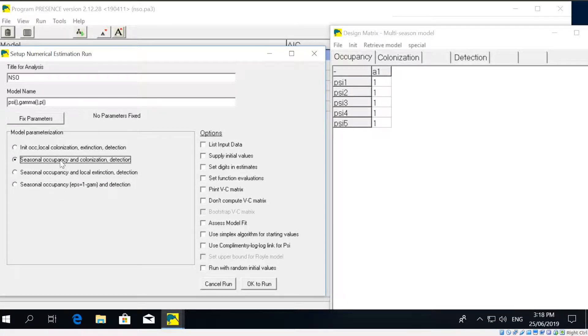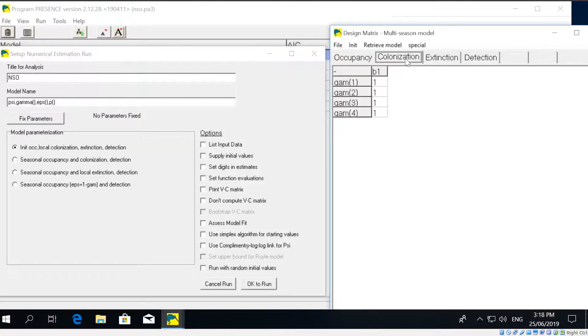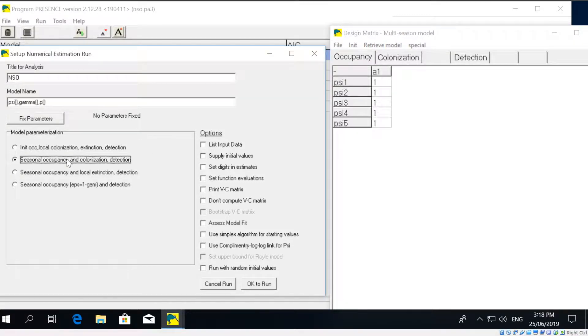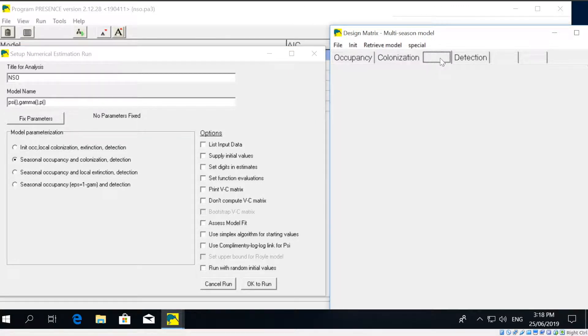And when I do that, in my design matrix I now have five different rows for occupancy, one for each of the five years. Now, as I said, this is one of those alternative parameterizations where instead of just estimating first year occupancy and then seasonal colonization and extinction, we're going to estimate seasonal occupancy and then either colonization or extinction but not both in this case.